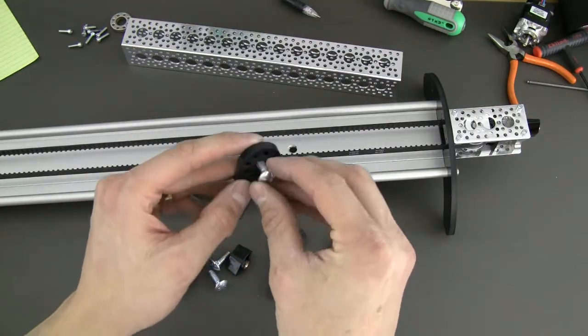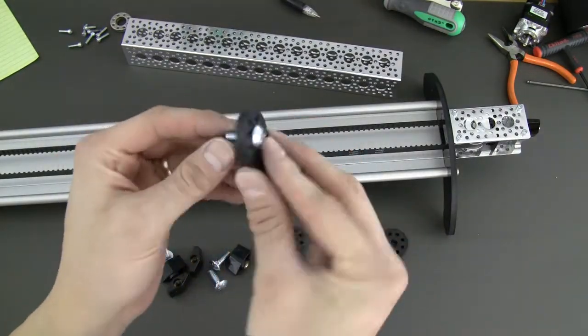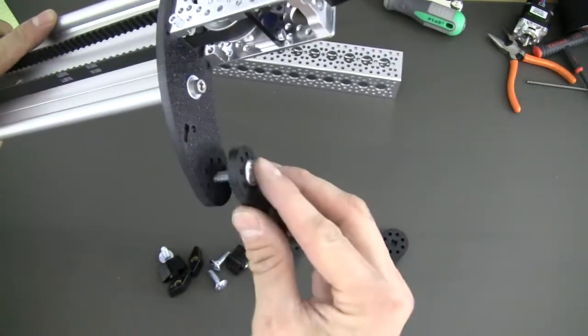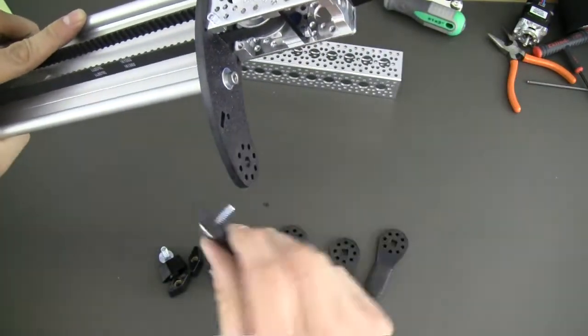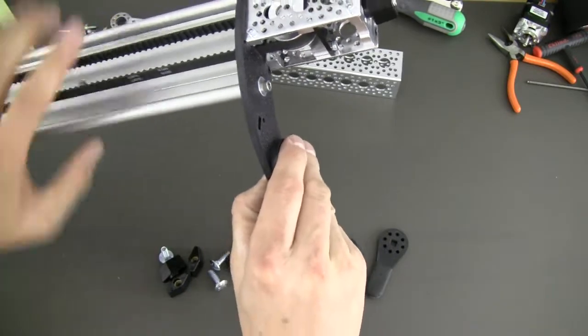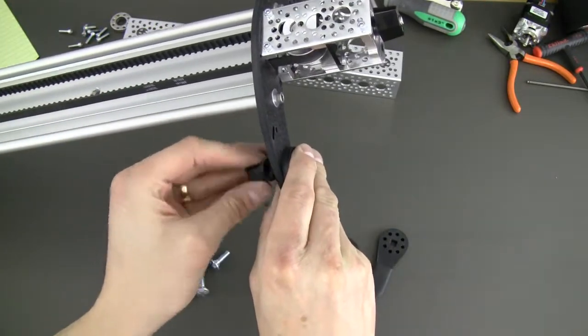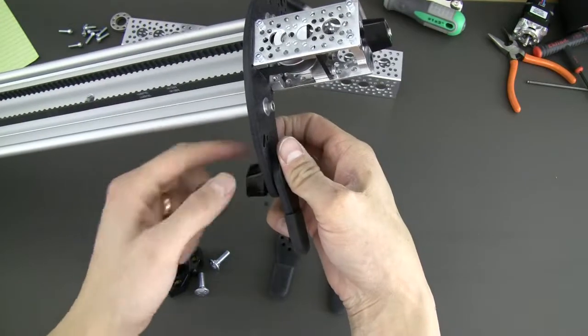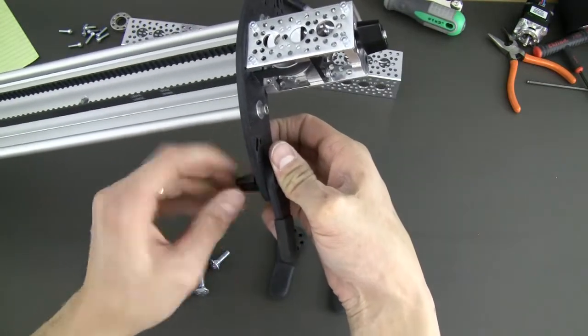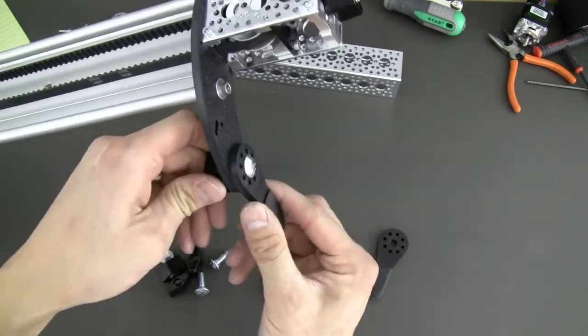So basically what you want to do is grab one of the little carriage bolts that comes with it, slide it right through. You can either put it on this side or that side, it doesn't really matter. And then of course attach your finger nut just like that.